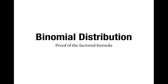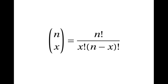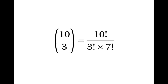This video contains a proof of the factorial formula, which says that n choose x is equal to n factorial divided by x factorial times n minus x factorial. I'm going to do this by explaining why 10 choose 3 is equal to 10 factorial divided by 3 factorial times 7 factorial.